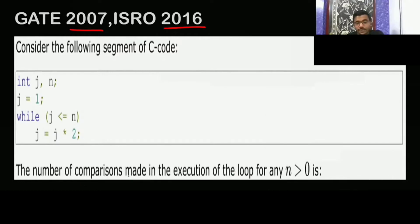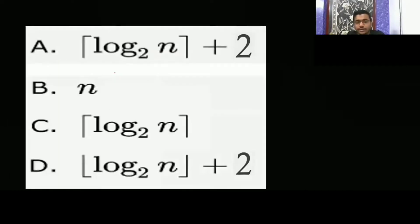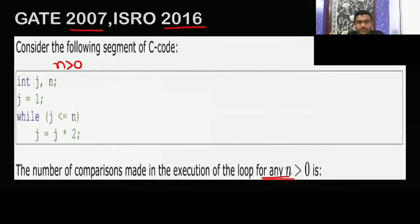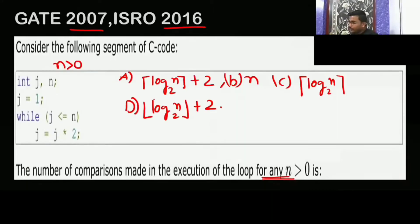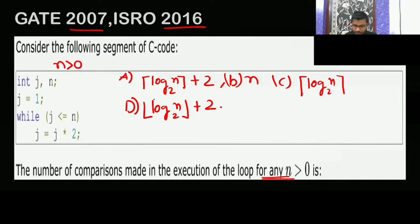They are asking the number of comparisons made in the execution of the loop for any n greater than 0 — not for a specific value. Questions in time complexity seem easy, but there is a high chance of doing a silly mistake. I am going to take n equal to 2 to the power 5.